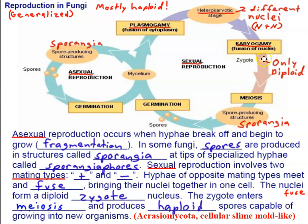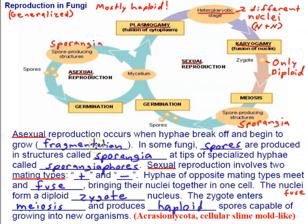The zygote immediately undergoes meiosis, so the cells dividing from it are haploid and remain haploid for most of the life cycle. The diagram is divided into two halves: asexual reproduction and sexual reproduction. There are two forms of asexual reproduction. One is fragmentation — a piece of hyphae breaks off, regenerates, and grows into a whole new fungus. The other is asexual spore production: spores produced by mitosis from sporangia, the spore-producing structures.